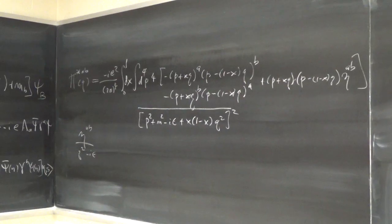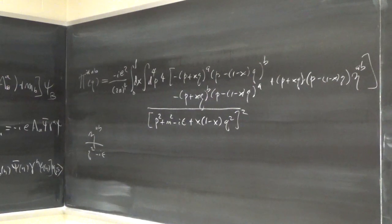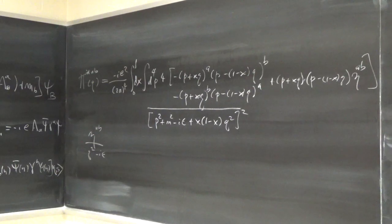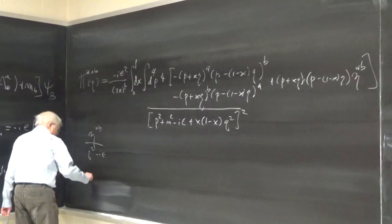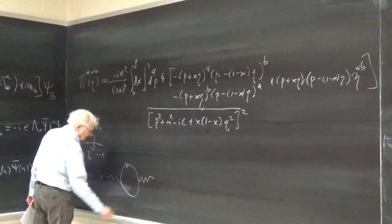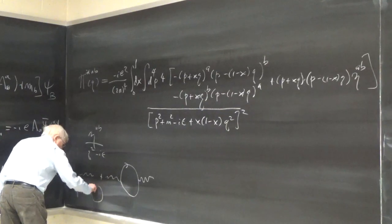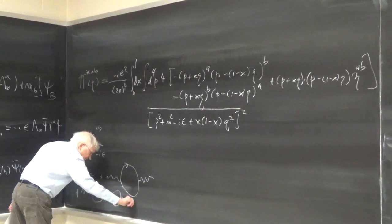[Student]: Why do they call this vacuum polarization? [Instructor]: The idea is that you can have electron-positron pairs popping out of the vacuum — like on the diagram, you have this loop. What we're doing is calculating the correction to the propagator from this loop, and of course there are also other corrections, higher-order ones, and so forth.